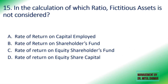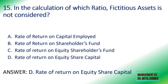Fifteenth: in the calculation of which ratio is fictitious assets NOT considered — rate of return on capital employed, rate of return on shareholders' fund, rate of return on equity shareholders' fund, or rate of return on equity share capital? The ratio in which we don't take reserves and surplus — fictitious assets will not be deducted. The answer is rate of return on equity share capital, as we only take share capital in the formula with no reserves and surplus, so no fictitious assets are considered.